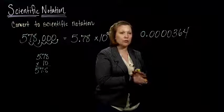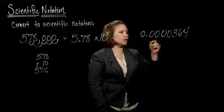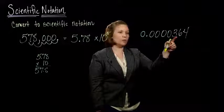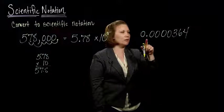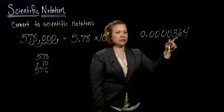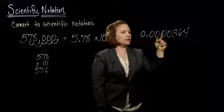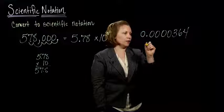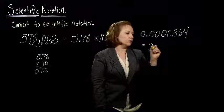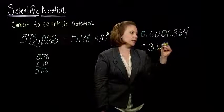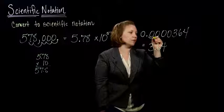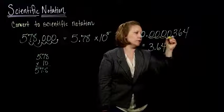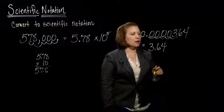Well, now our number's small. And so we want our decimal point to be, where do we want it to go? Right, we need it to go between the 3 and the 6 to have one non-zero digit in front. So between the 3 and the 6, and we can count, we would move 1, 2, 3, 4, 5 places.